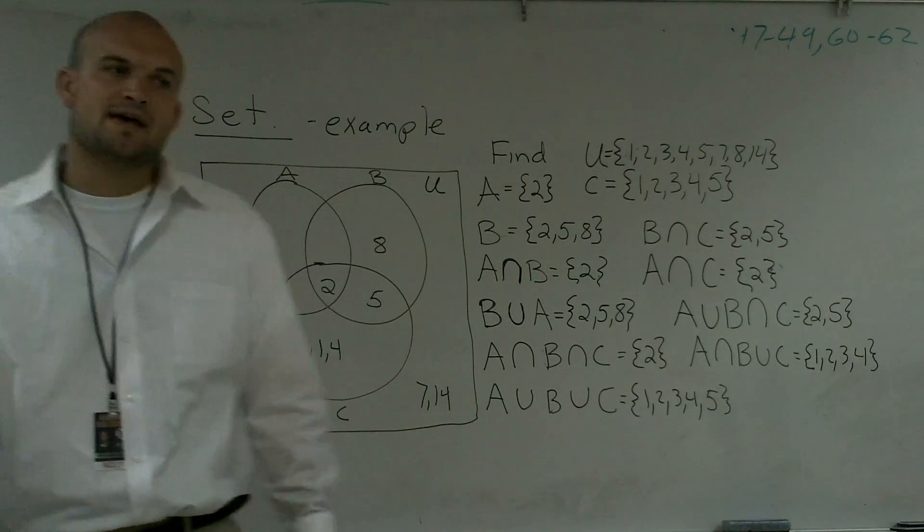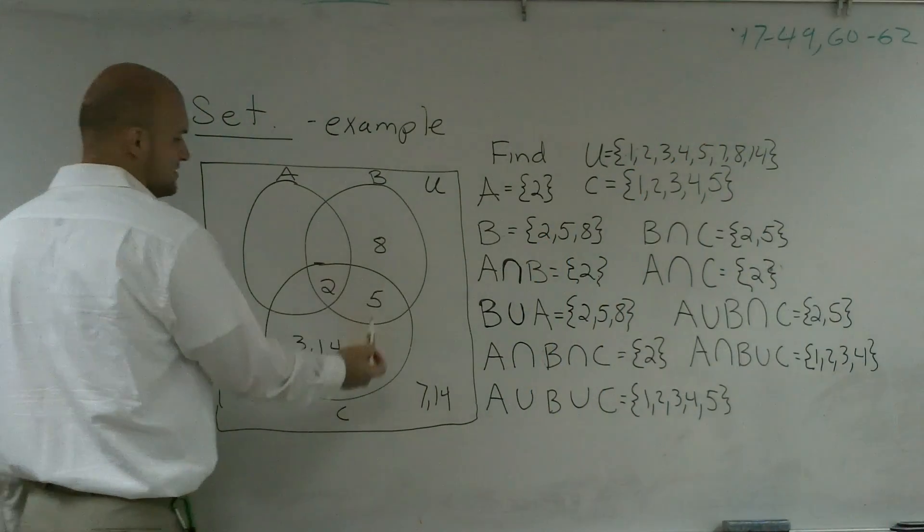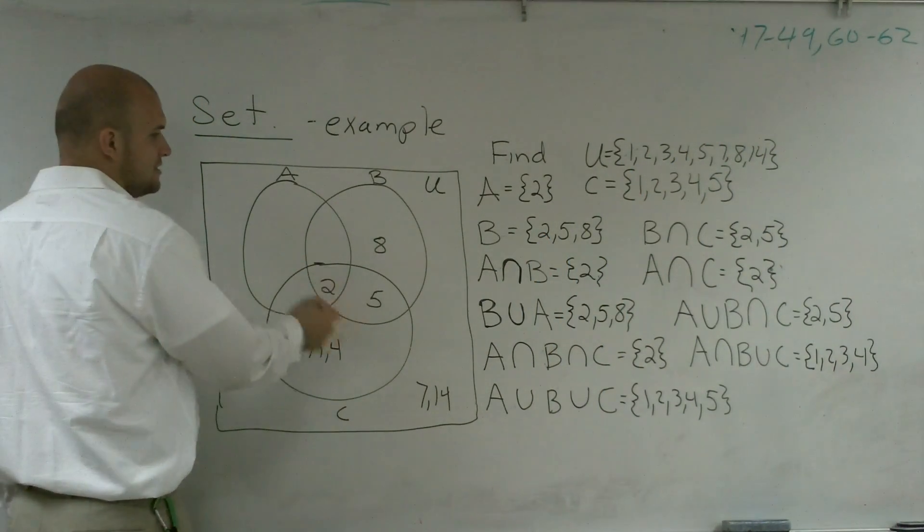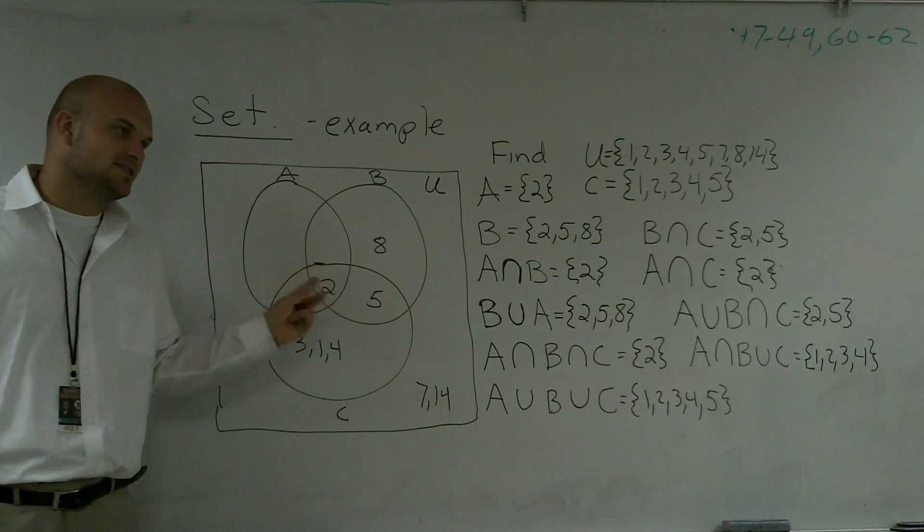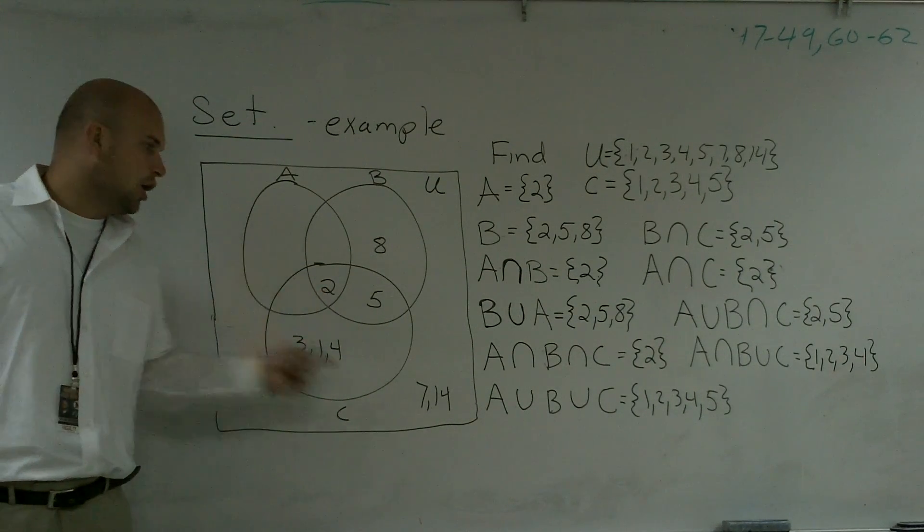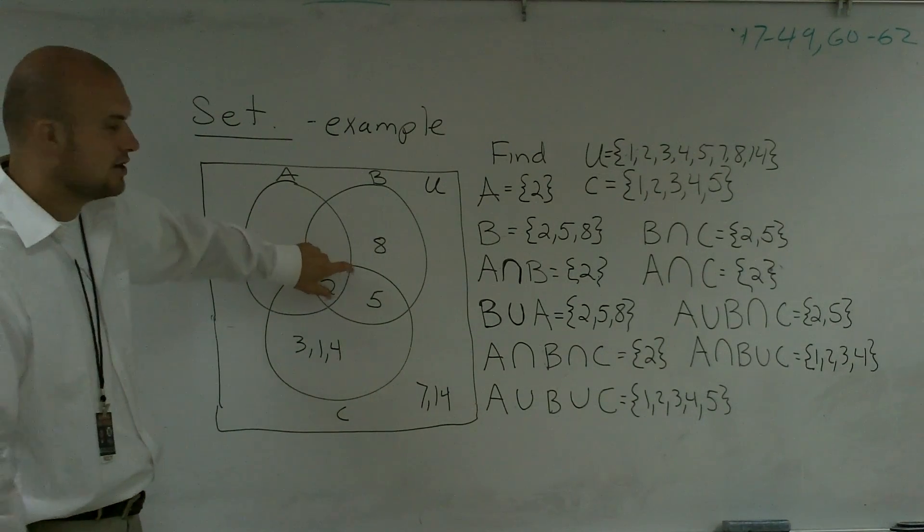So what do all three of them all have in common? So you go and look at that, you say A intersect B intersect C. That's going to only contain 2. This is the only part of all three of these circles. Does everybody see that? All three of these circles intersect at that point. Or I'm sorry, in this area.